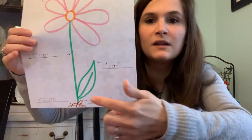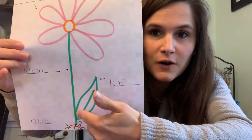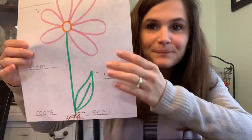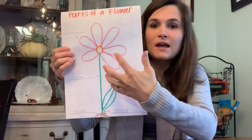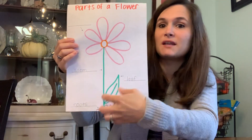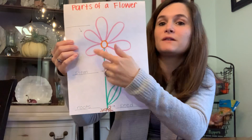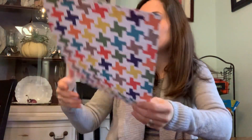It will also start to grow leaves — I'm going to add in 'leaf' over here, you can see that. And then finally, once that sprout has grown the stem and the leaf, it will begin to bloom and we will get our flower.